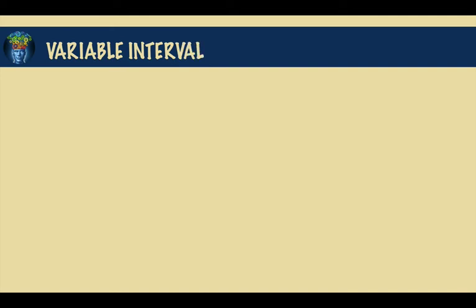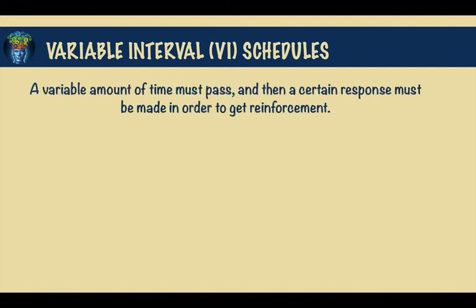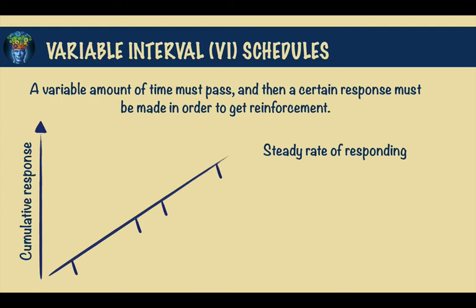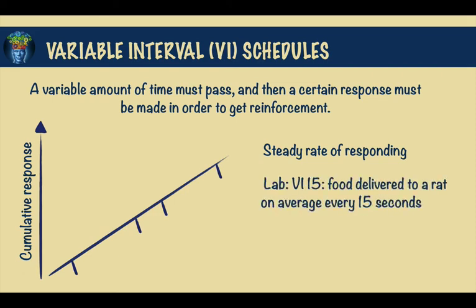Lastly, we have the variable interval reinforcement schedule. As with the variable ratio schedule, the pause after reinforcement can be eliminated by shifting from the fixed interval to the variable interval schedule. In this way, a steady rate of responding will be generated. How high that rate is will depend on the frequency of the reinforcement. A lab example would be a VI15, where food is delivered to a rat on average every 15 seconds.